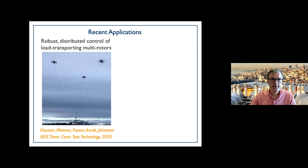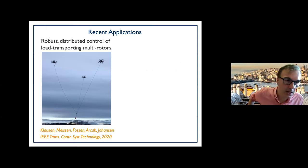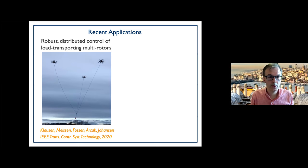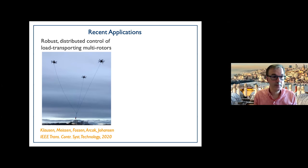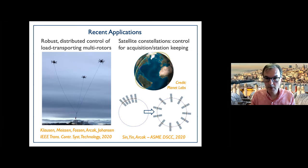After that book, there were a couple of additional applications. In one paper, I worked with colleagues in Norway on distributed control of load-transporting multi-rotors. The load has unknown mass and there are unknown environmental disturbances — especially wind in Norway. The control laws are built on dissipation properties and include adaptation to handle wind forces and the unknown mass.